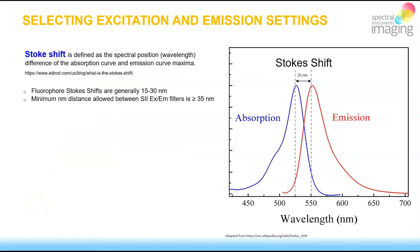Here's the key concept: the Stokes shift — the distance between the absorption and emission maxima of commercial fluorophores available to you — is typically on the order of 25 nanometers. This distance is 10 nanometers narrower than the minimum distance allowed between our excite and emission filters.